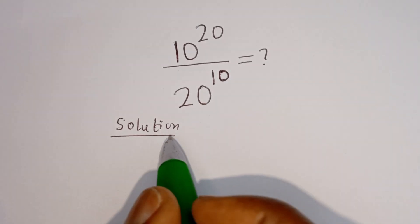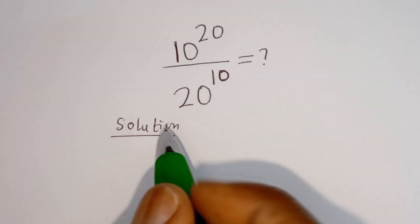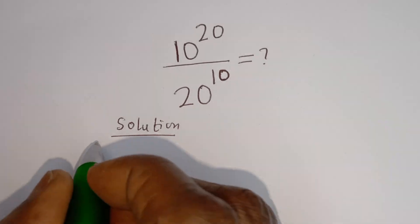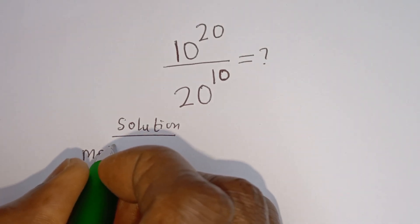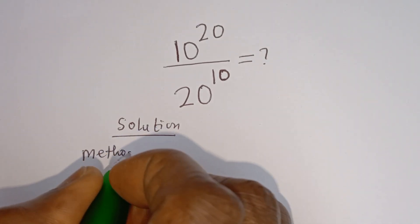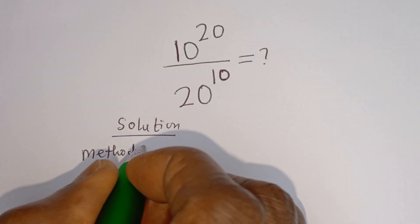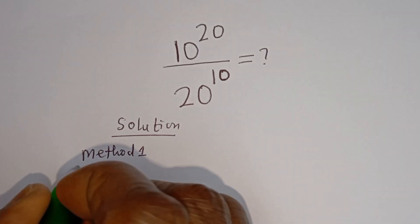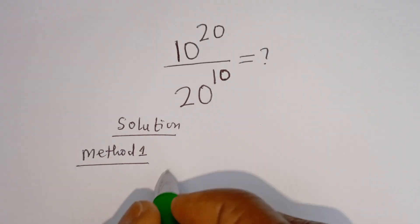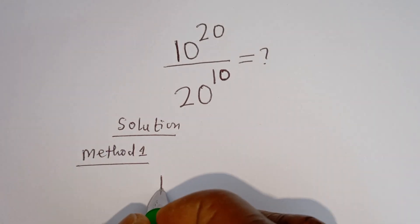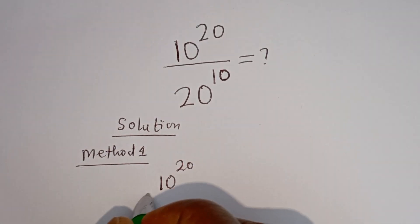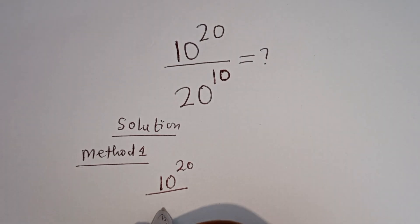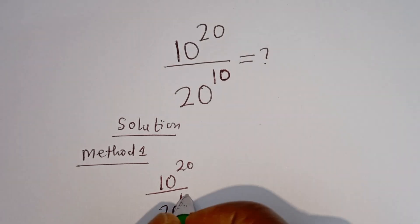Here we are going to make use of two methods. Let's consider the first method, called Method 1. We have 10 to the power of 20 divided by 20 to the power of 10.